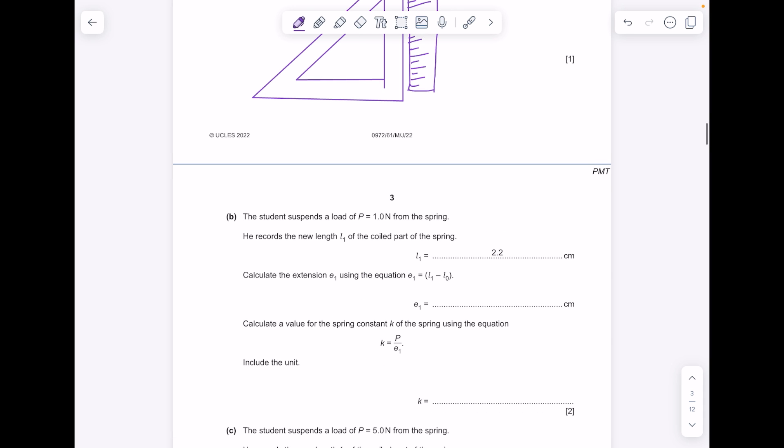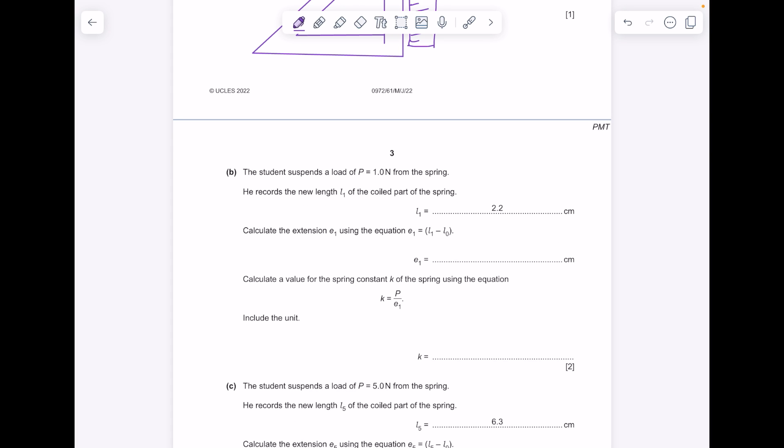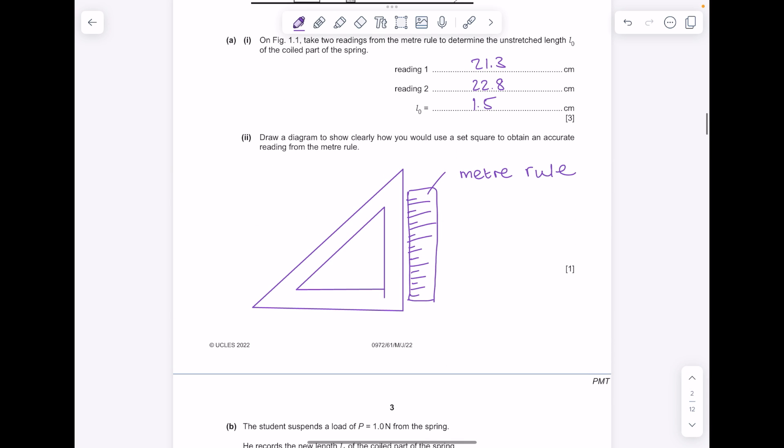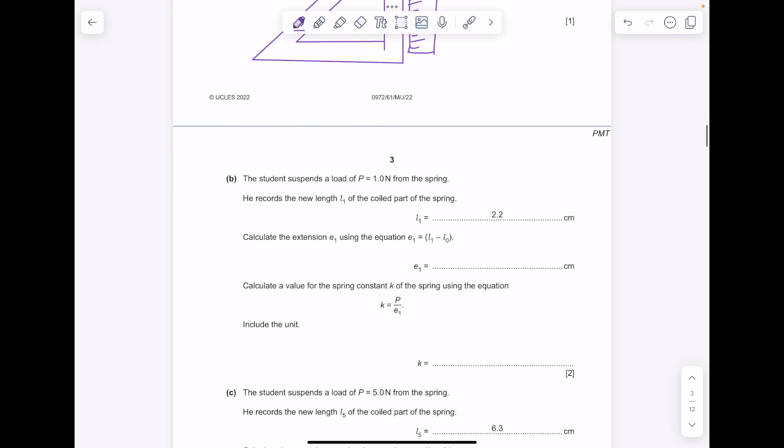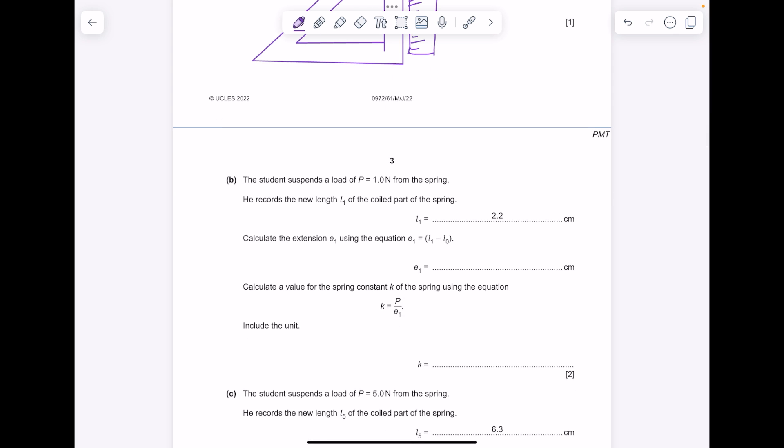The student suspends a load of P equals 1 newton from the spring. He records the new length L1 of the coiled part of the spring, that's 2.2 centimeters. Calculate the extension E1 using the equation length 1 minus length 0. So it's 2.2 minus L0 which is 1.5, and therefore the answer here is 0.7.